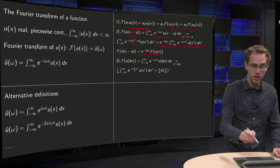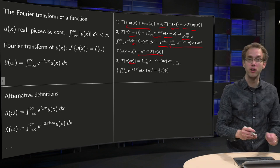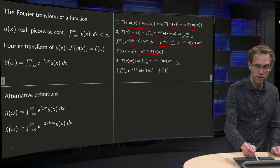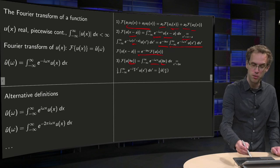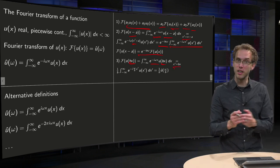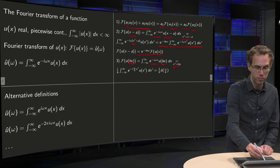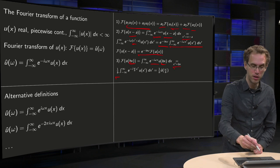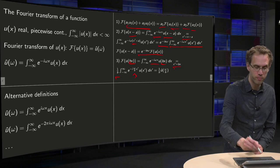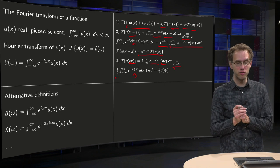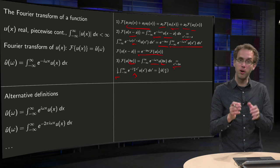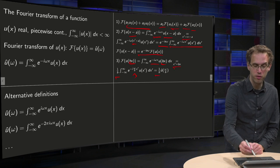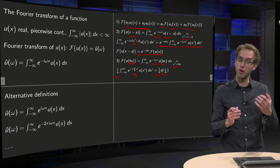You can do a similar trick if you have the Fourier transform of u of b times x. What do you do? Similarly, you use the definition with a substitution x-prime equals b times x. Then dx-prime equals b times dx, so you get a factor of 1 over b. And then you put x-prime over b, putting a 1 over b into the omega argument. What you see is that you have the Fourier transform of u, but with omega replaced by omega over b. So you get 1 over b times u-hat of omega over b.